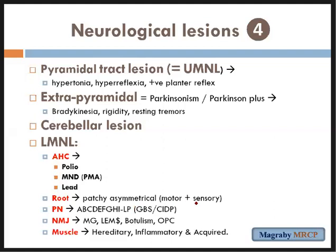At the neuromuscular junction, the famous condition is myasthenia gravis, plus Lambert-Eaton myasthenic syndrome, botulism, and organophosphate poisoning. Any lesion in the muscle — either hereditary like Duchenne or Becker muscular dystrophy, inflammatory like dermatomyositis or polymyositis in connective tissue disorders such as rheumatoid arthritis or lupus, or acquired like drug-induced myopathy, steroid-induced, statin-induced, or endocrine causes like Cushing's disease — all constitute lower motor neuron-level pathology.